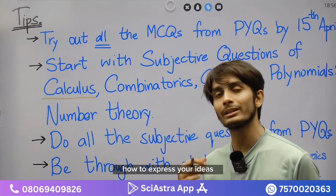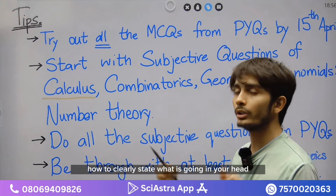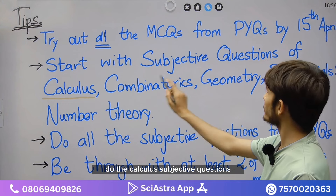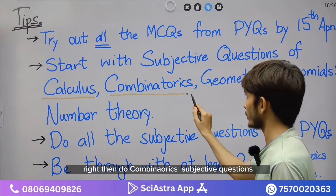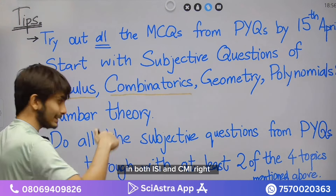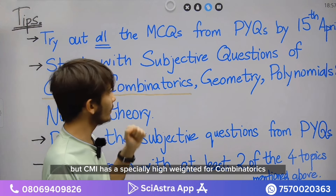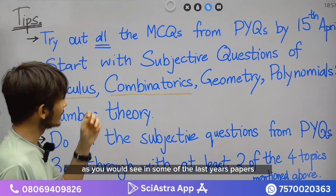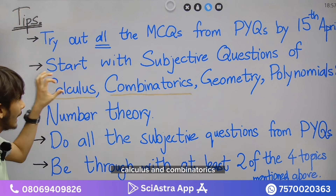You need to understand how to write your answer, how to express your ideas, how to clearly state what is going in your head, and how to approach the problems. Do the calculus subjective questions. Then do combinatorics subjective questions — this shows up a lot in both ISI and CMI. CMI has a specially high weightage for combinatorics subjective questions, as you would see in some of the last year's papers. That is why I'm asking you to do these topics first — calculus and combinatorics — as they cover a big chunk of your subjective part in both exams.